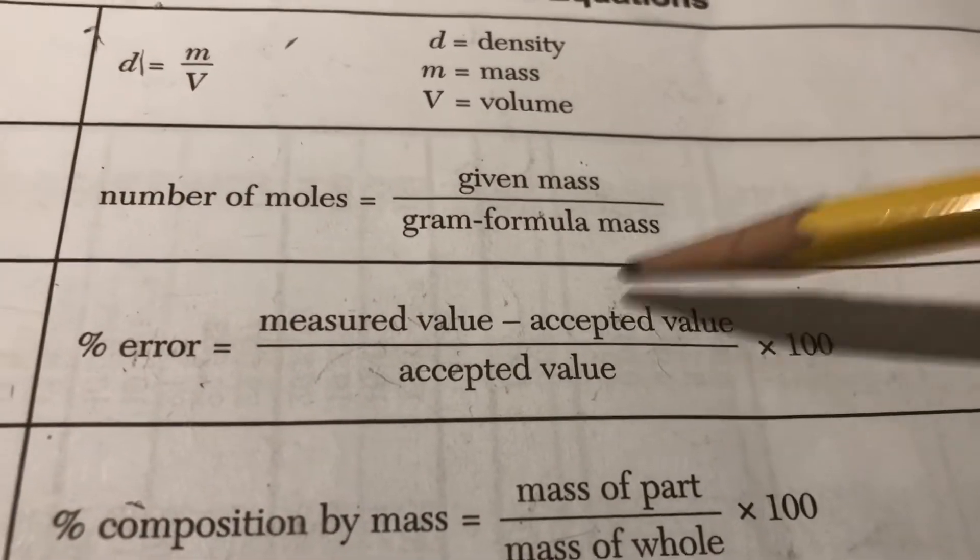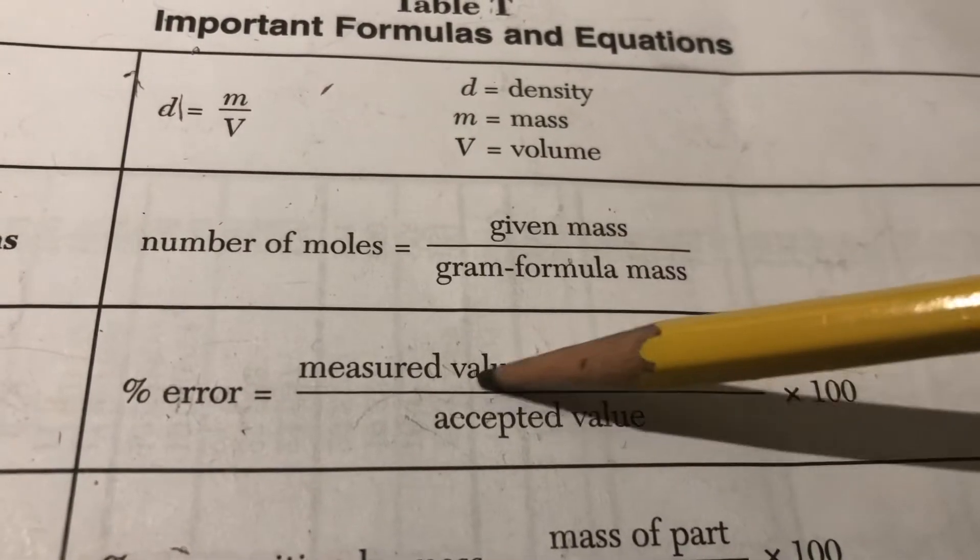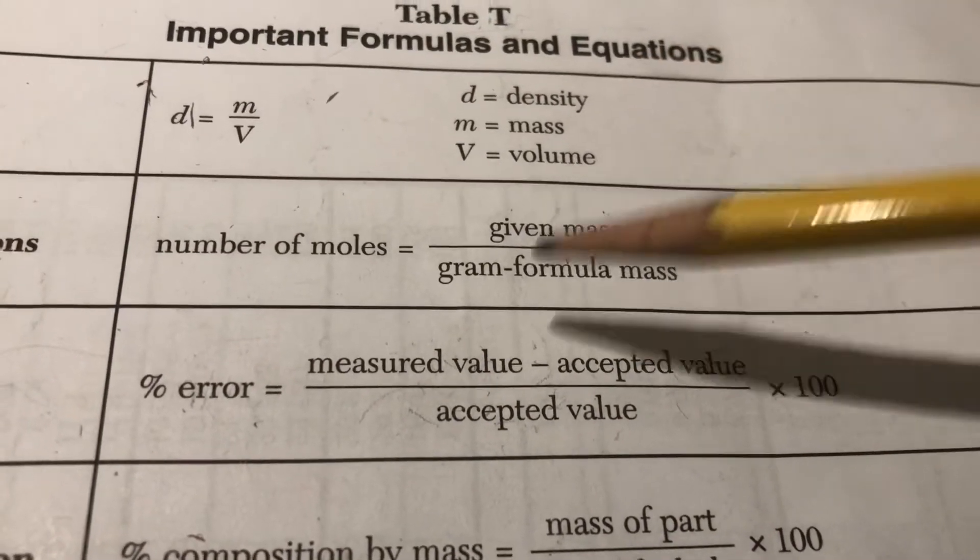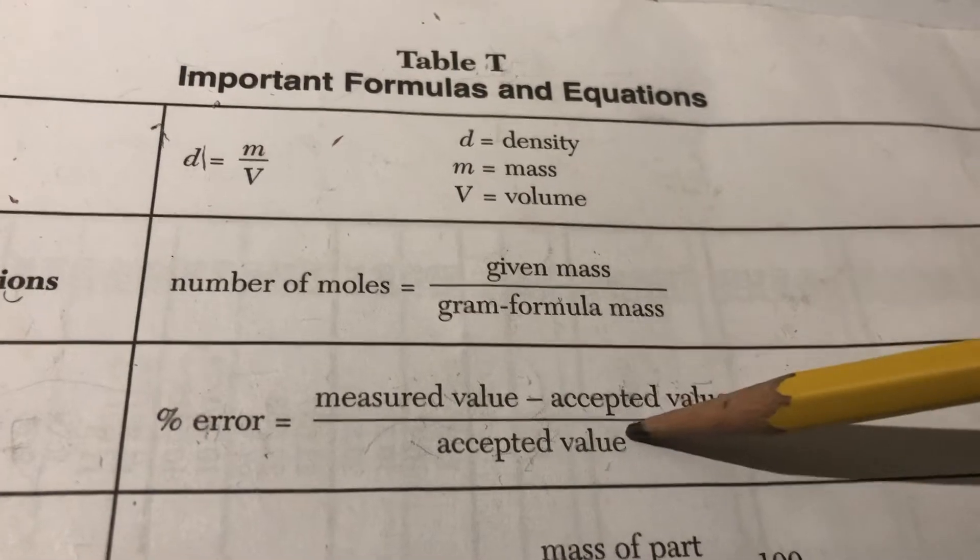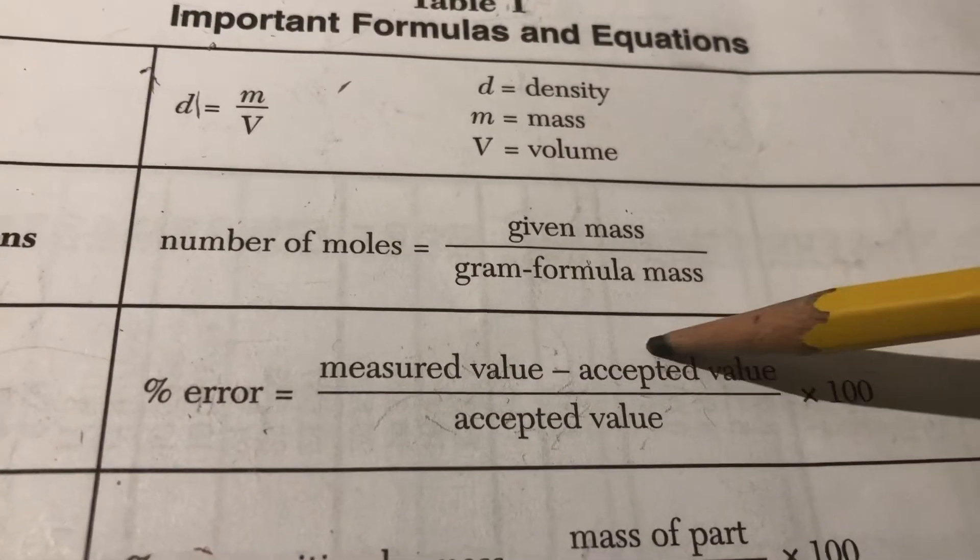Now, what's the purpose of the percent error? It's helping us determine how accurate we were in relation to an experiment. Remember we talked about accuracy being how close you are to the true, to the accepted, or the actual value. So that's what the percent error helps us with.